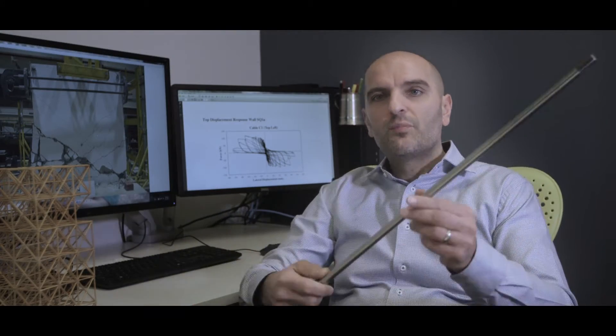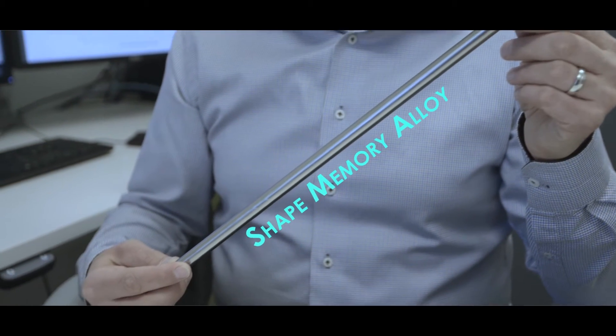One application we are looking at right now—here's a bar. This is what we call a shape memory alloy. It is essentially nickel titanium. The nice thing about this type of material is that if you pull on it and then you let go, it goes back to its original position.